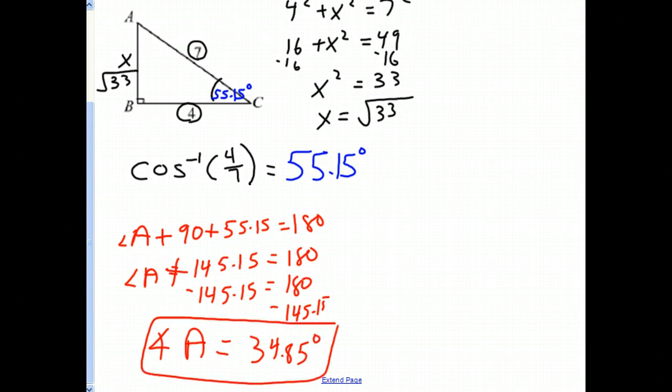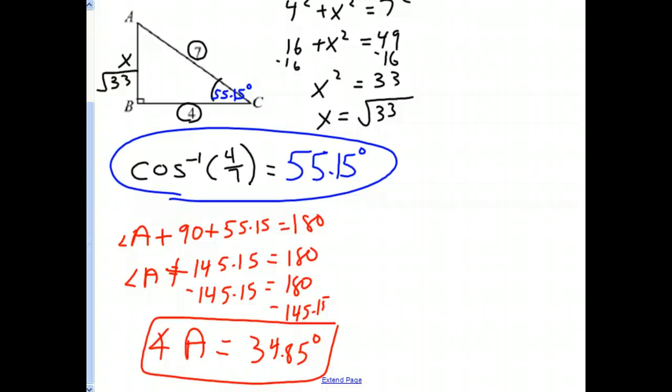But what we're learning new here is simply what we did right there. In order to find an angle, which we've never been able to do before, we can use the inverse, in this case the inverse cosine, knowing the two sides, in this case the adjacent side and hypotenuse, to put it on our calculator and we can find the angle. It's a very useful function for the inverse trig functions.